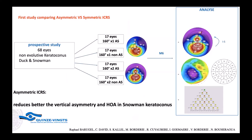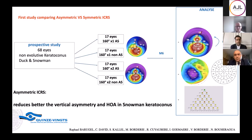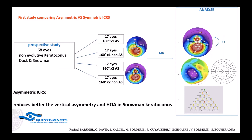We made the first study comparing asymmetric versus symmetric intracorneal ring segments with the 60/68 ISIS. The main conclusion was that this kind of intracorneal ring segment reduces better the vertical asymmetry and the higher-order aberrations in the snowman keratoconus form.